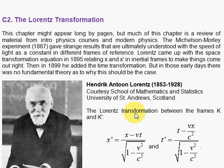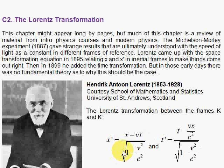What did Lorentz come up with? He said that x prime in the moving frame — that coordinate — is given by the Galilean Transformation modified by dividing by the square root of 1 minus v squared over c squared.